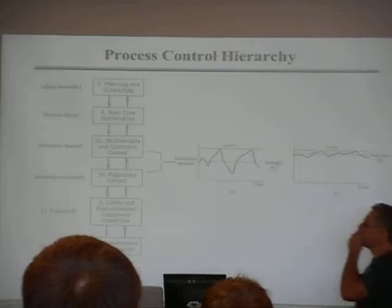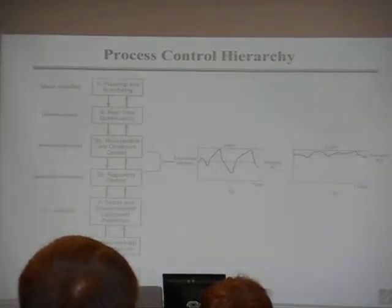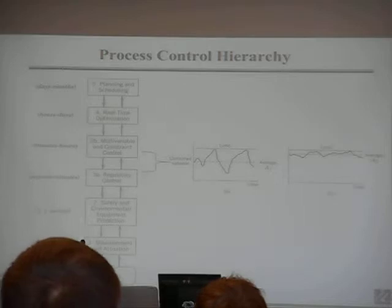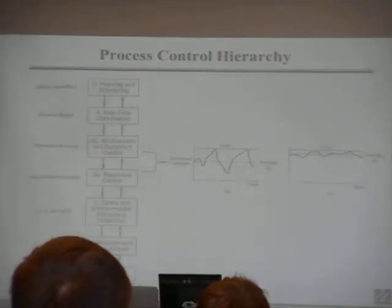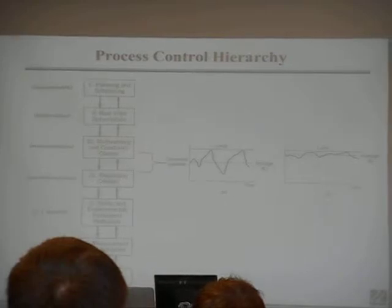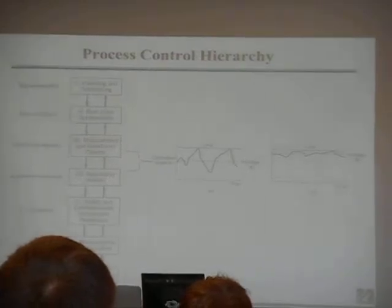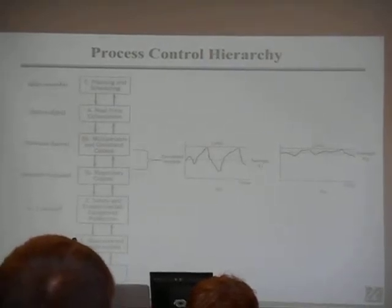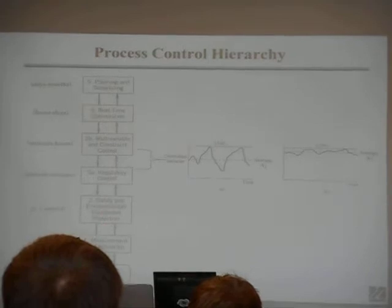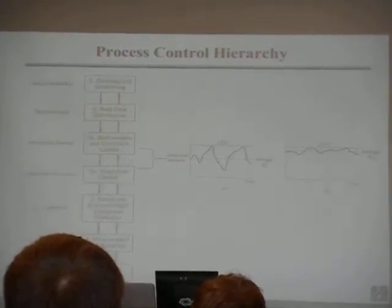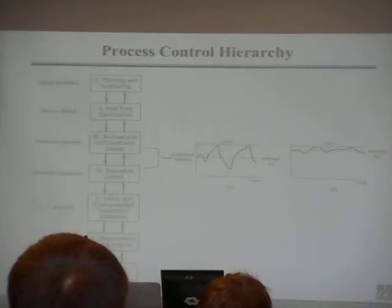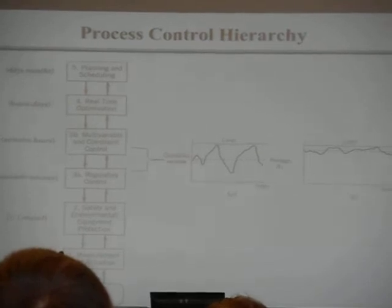If you look at a typical plant, these are all the layers of control meant to avoid what we just saw. First you have the process, then you have measurement and actuation — measuring flow, temperature, pressure, and typically moving valves — on a time scale of less than a second. Then you have interlocks and safety systems put in place to make sure what you just saw does not happen. There's a control system that overrides the main control system and just shuts everything down.